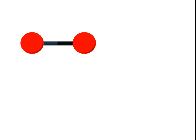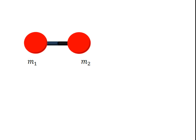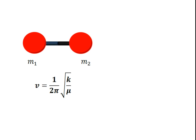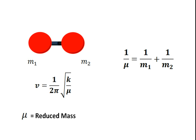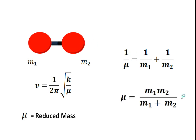Now consider Hooke's law applied to a molecule. Suppose we have a diatomic molecule that is vibrating. We consider the bond like a spring, with the two atoms having masses m1 and m2. When these are vibrating, we have an oscillation frequency given by 1 upon 2π under root of k upon mu, where mu is the reduced mass. The reduced mass is given by: 1/mu = 1/m1 + 1/m2, or equivalently mu = m1 m2 upon m1 plus m2.